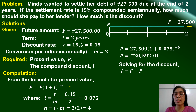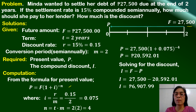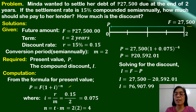Solving for the compound discount: D is equal to the future value minus the present value — that is 27,500 minus 20,592.01. The compound discount is therefore $6,907.99.